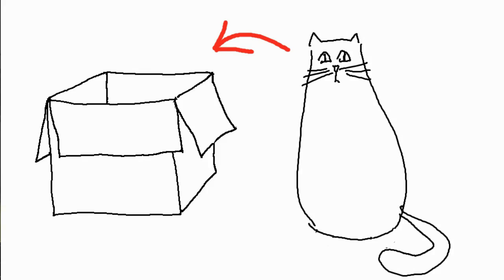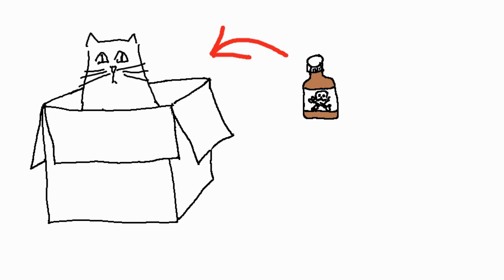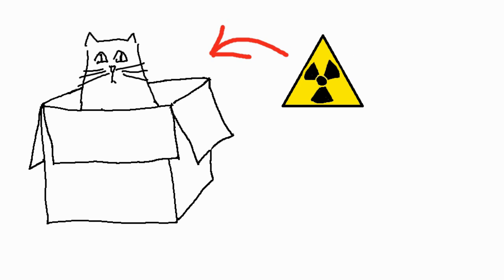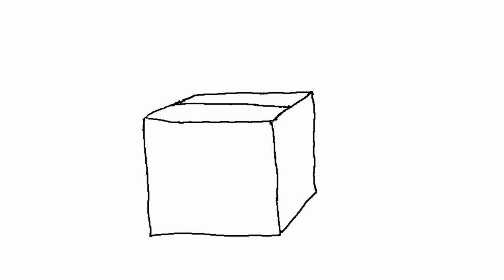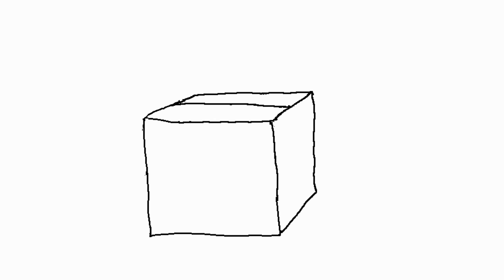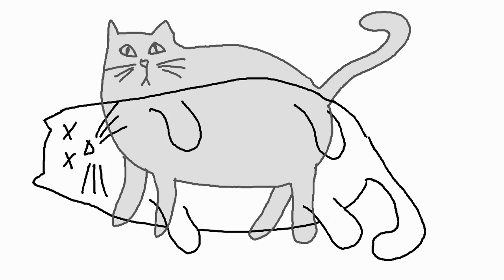If you put a cat in a box with a bottle of poison, which, with the help of a radioactive device, is ready to break open at any time, and then close the box — until the box is open, you can't know if the cat is dead or alive. In quantum physics, the principle of quantum superposition kicks in, which in this case means that the cat is both dead and alive at the same time. Only when you open the box can you tell if it's dead or alive. The weirdness of incomprehensible science with a dash of animal cruelty.